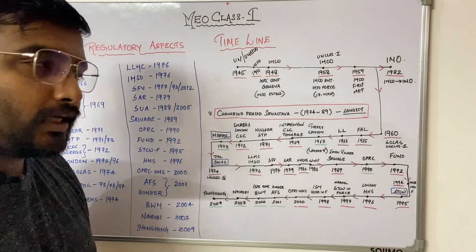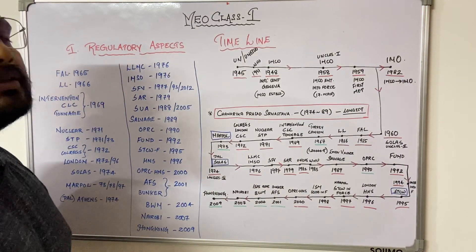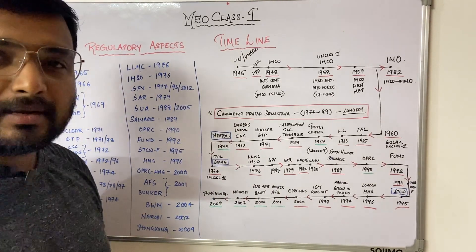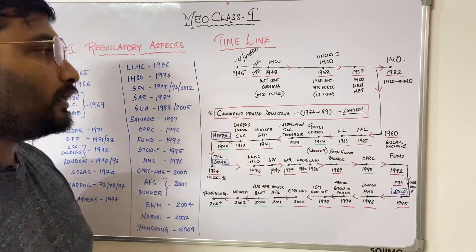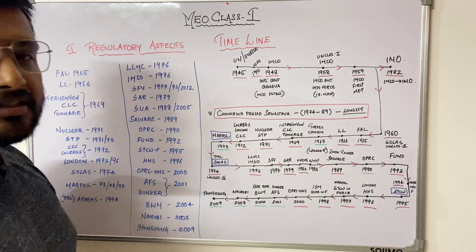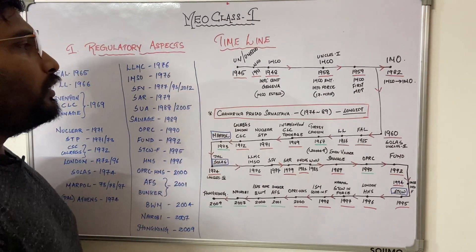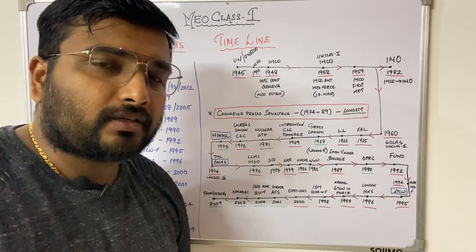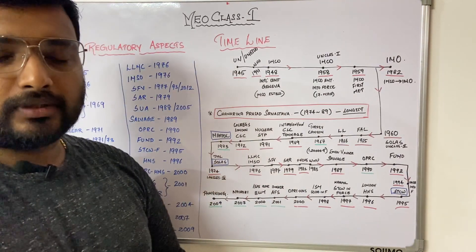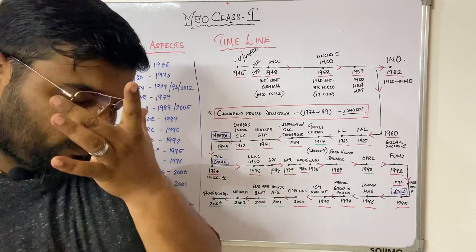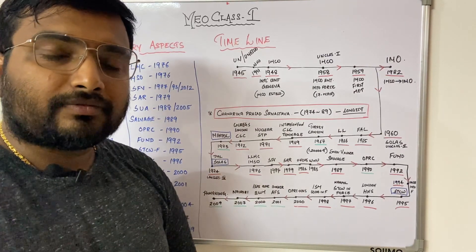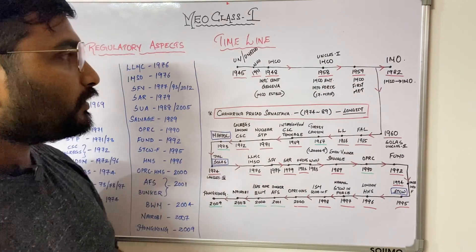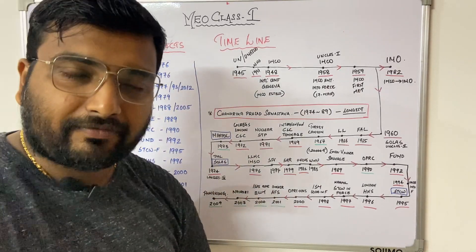Hello guys, welcome to this video. This video is all about the timeline of conventions of IMO. Let's start from 1945 — post World War 2, the UN, UNESCO and all these organizations were formed in 1945, following WHO's formation in 1947.